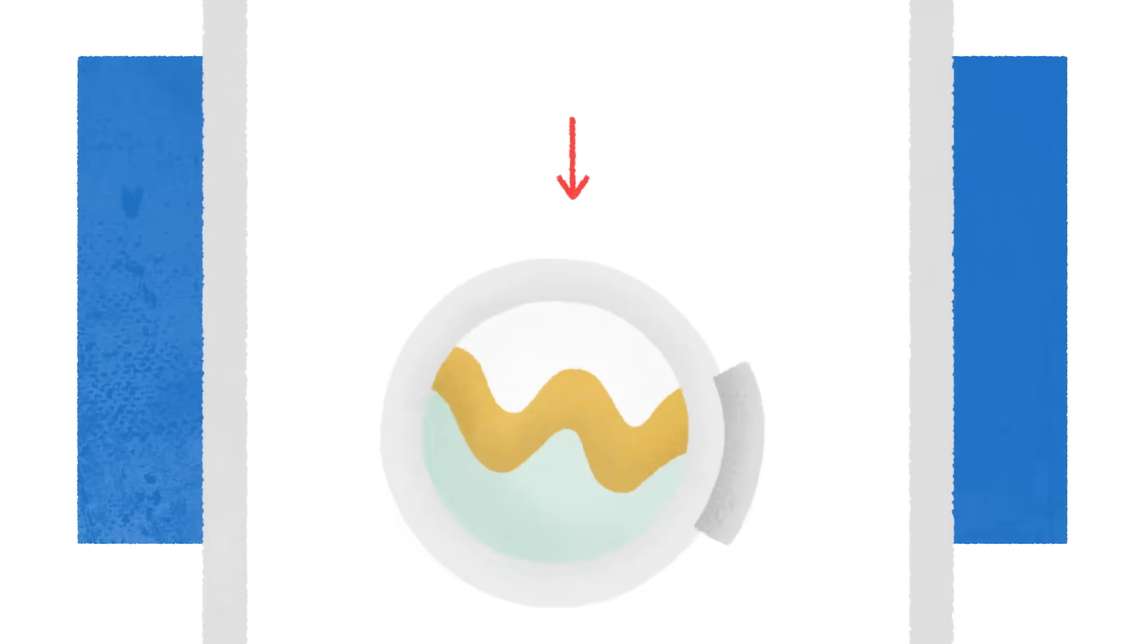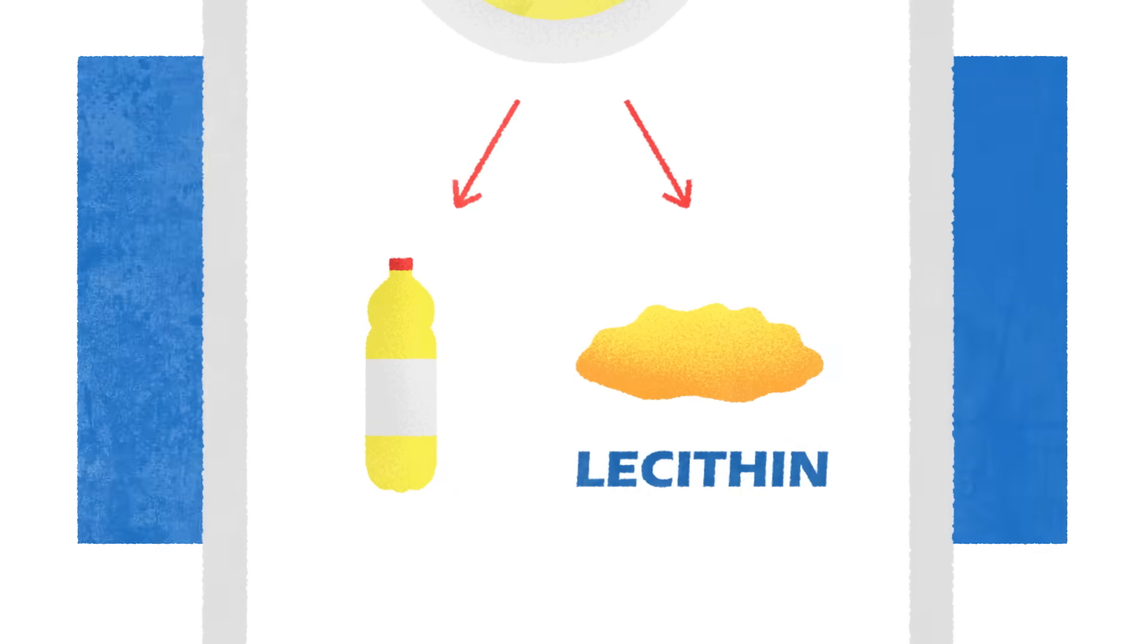By adding water and spinning the mixture, components are separated into two parts — refined soy oil for things like salad dressing, and a substance called lecithin.